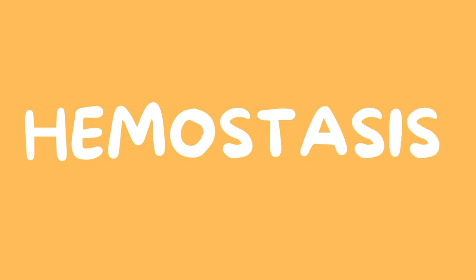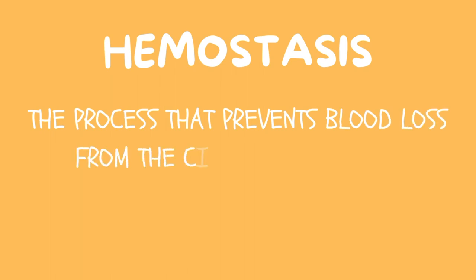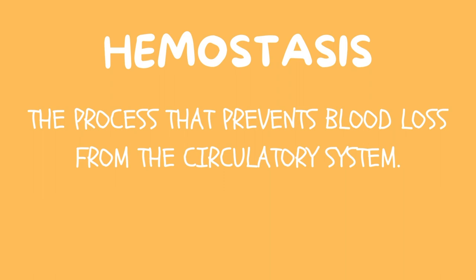Moving on to hemostasis. Hemostasis is a process that prevents too much blood loss from the circulatory system. Hemostasis is activated when there is a tear in a blood vessel or there is a foreign object in the inner layer of the blood vessel. For example, if there's a needle in your blood vessel from a blood draw, then this needle touching the inner part of the blood vessel will trigger hemostasis.